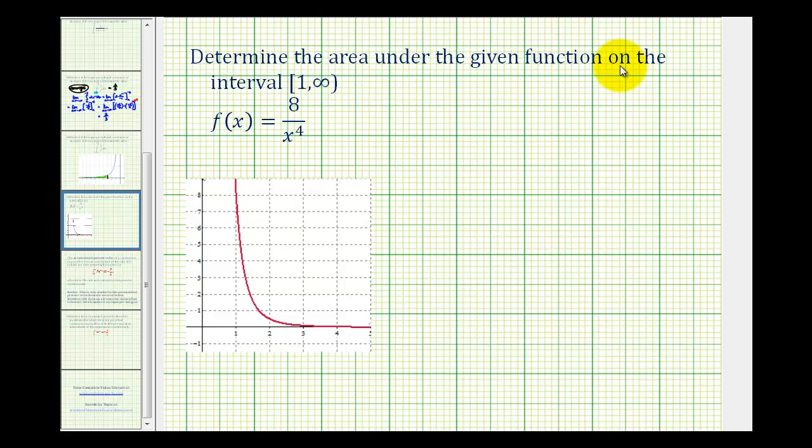We want to determine the area under the given function on the interval from one to infinity where the interval is closed on one. So here's x equals one, and we'd move to the right indefinitely to approach positive infinity.